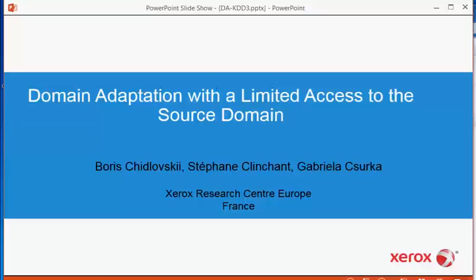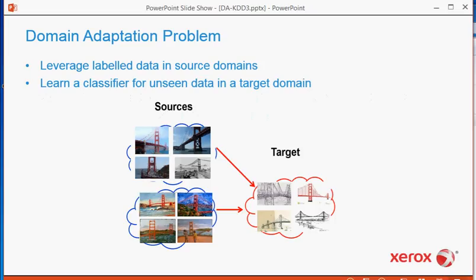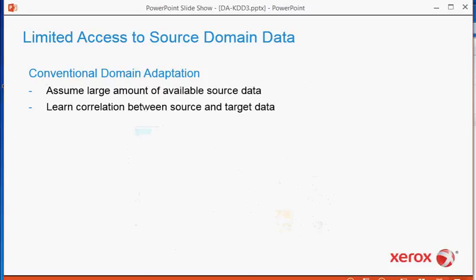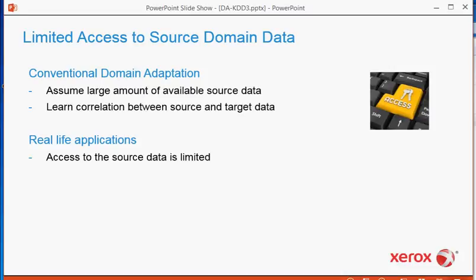This work is on domain adaptation with limited access to the source domain. The problem of domain adaptation comes up each time when we use data from source domains and learn a classifier for data in a target domain. In the conventional setting, source data is assumed to be easily available to measure a correlation between source and target and to transform the feature spaces in such a way that can ease the adaptation.